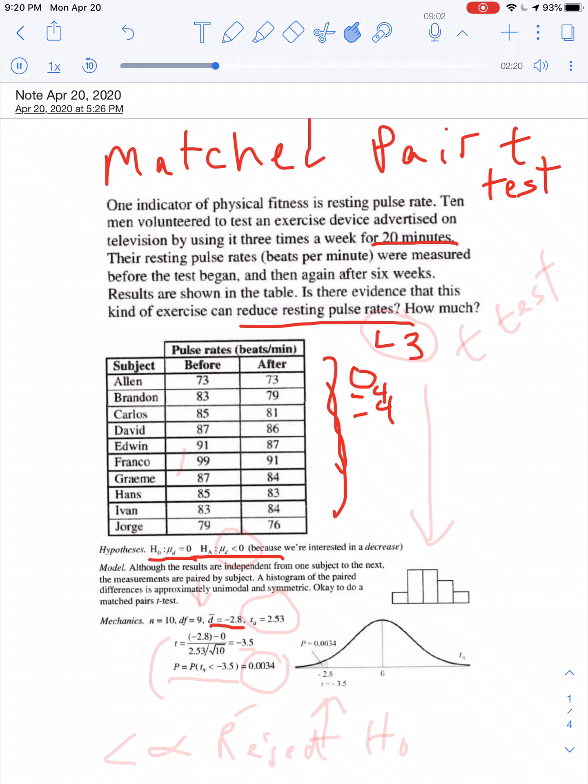μD, μDIF, is equal to zero for the null. And the alternative hypothesis down here would be that it's negative, because we're interested in having a decrease.